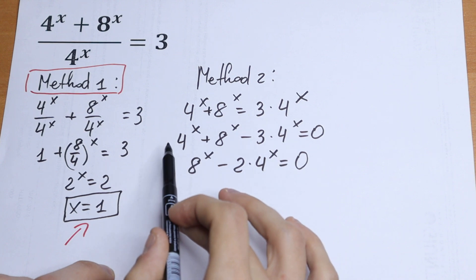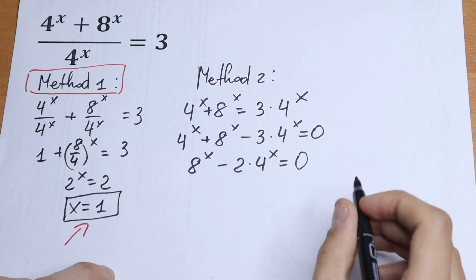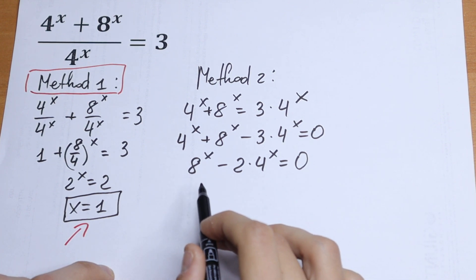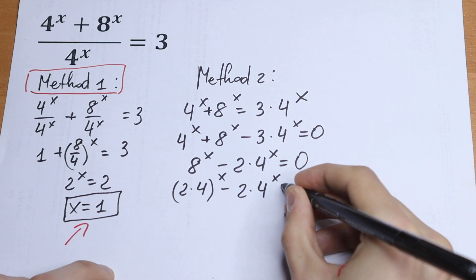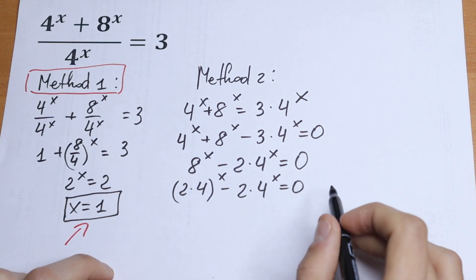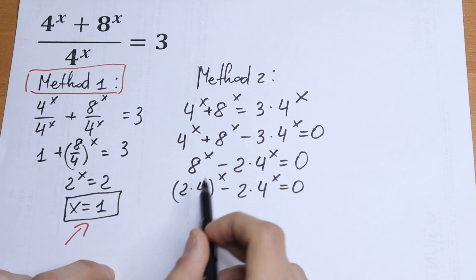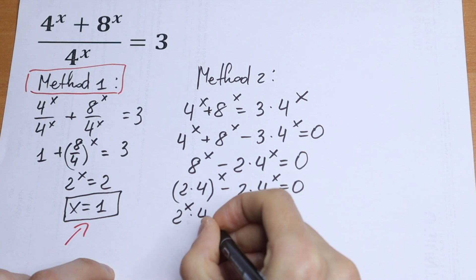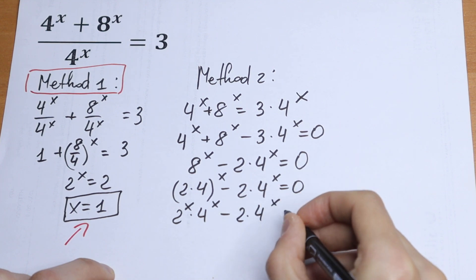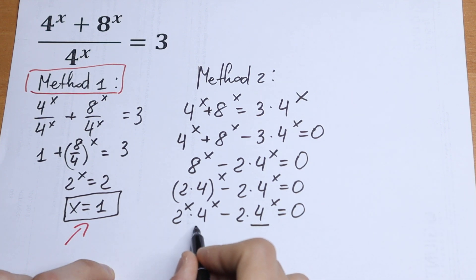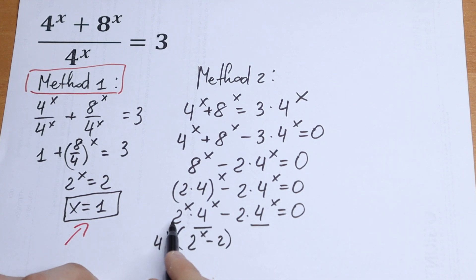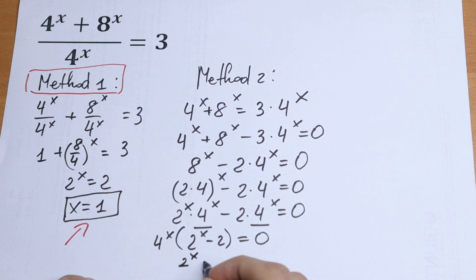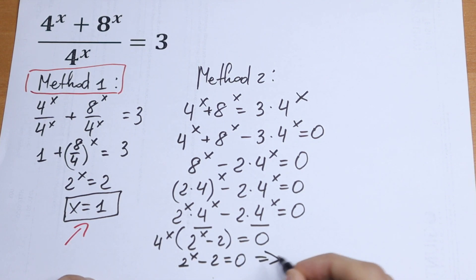We have 4 to the power x minus 3 times 4 to the power x, which is like x minus 3x, giving minus 2x — but here x is 4 to the power x. So we get 8 to the power x minus 2 times 4 to the power x equals 0. Writing 8 as 2 times 4, we get 2 to the power x times 4 to the power x minus 2 times 4 to the power x equals 0. Factoring out 4 to the power x: 4 to the power x times (2 to the power x minus 2) equals 0. Since 4 to the power x equals 0 has no roots, we solve 2 to the power x minus 2 equals 0, giving x equals 1.